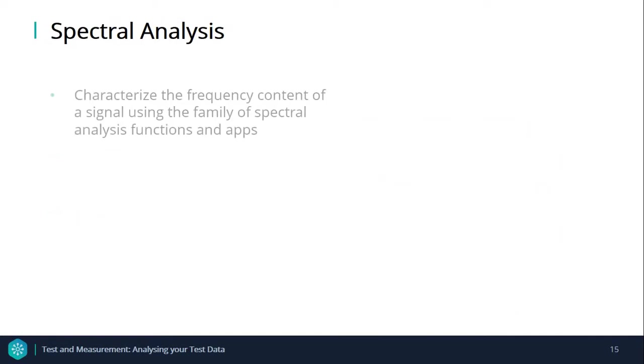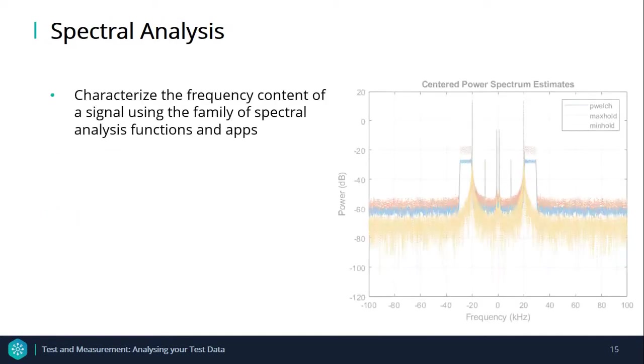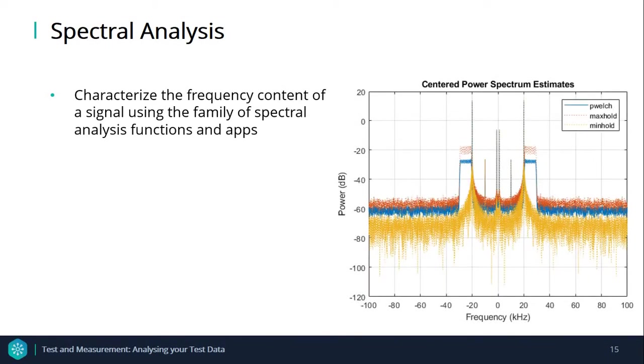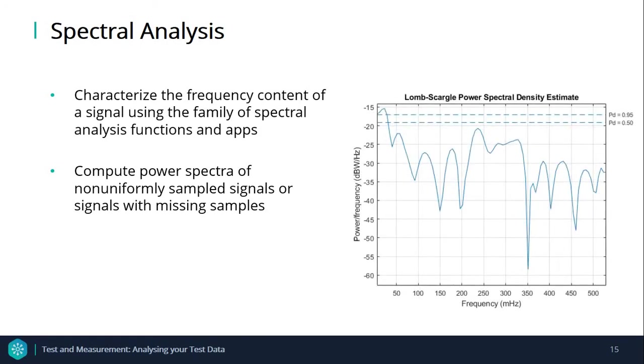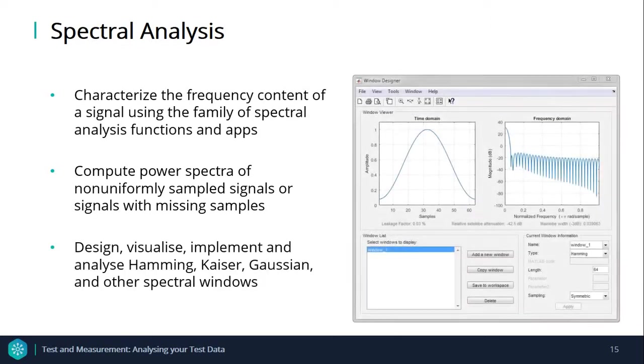There is a family of spectral analysis functions and apps that you can use to characterize the frequency content of a signal. Users can compute power spectra of non-uniformly sampled signals or signals with missing samples. No assumptions are made about the input data when using FFT-based non-parametric methods that are readily available. In both digital filter design and spectral estimation, the choice of a windowing function can play an important role in determining the quality of overall results. The Signal Processing Toolbox lets you design your own windows or you can choose from the available ones.